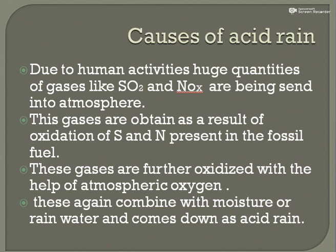Let us learn what are the causes of acid rain. Due to human activities, huge quantities of gases like SO₂ (sulfur dioxide) and nitrous oxide are being sent into the atmosphere. Human activities include burning of fossil fuels, automobile exhaust, domestic fires, and power plant emissions. These gases are obtained as a result of oxidation of sulfur and nitrogen present in the fossil fuels.